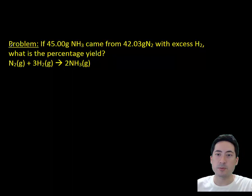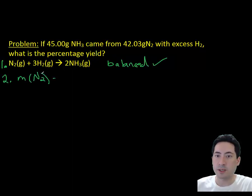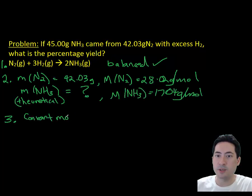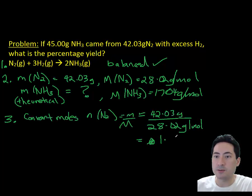Here's the first problem. 45 grams of ammonia came from 42 grams of nitrogen. We have the balanced equation done for us, so we need to work out how much we should have got. If we grab 42 grams of nitrogen, that gives us 1.5 moles.